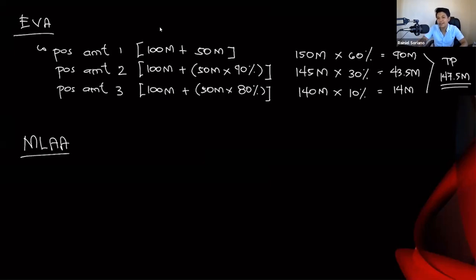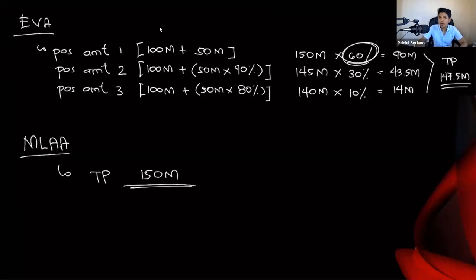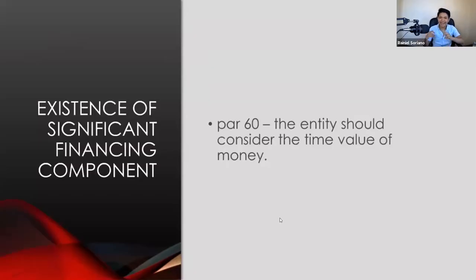For requirement B, the most likely amount approach: the transaction price equals the possible amount with the greatest chance of occurrence, which is the 60% probability scenario — possible amount one at 150 million pesos. Requirement B answer: 150 million pesos.